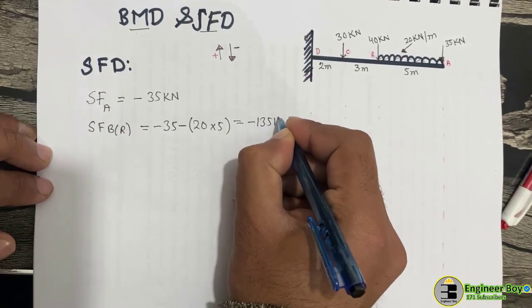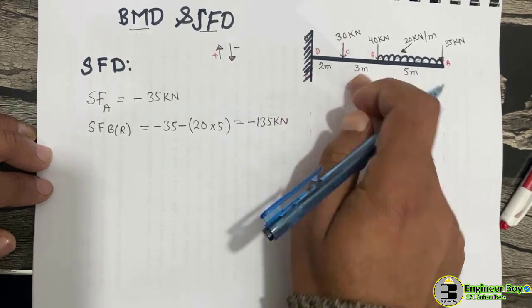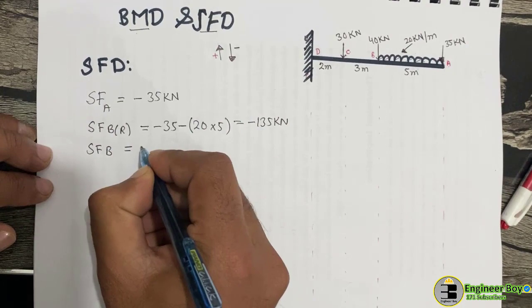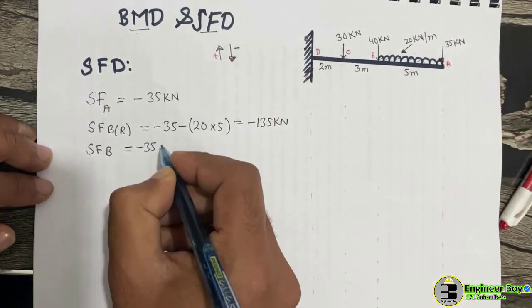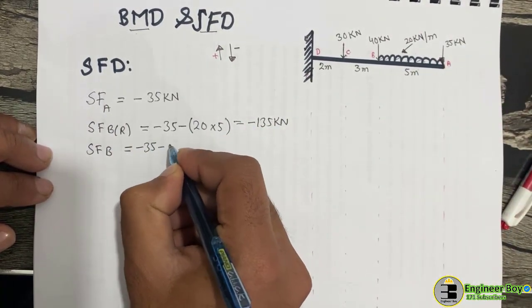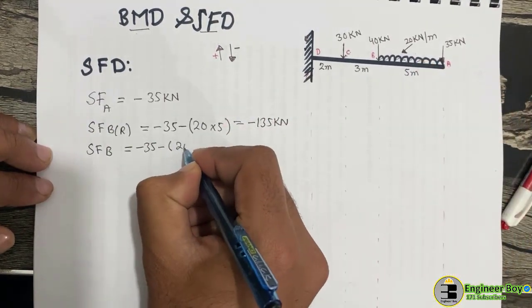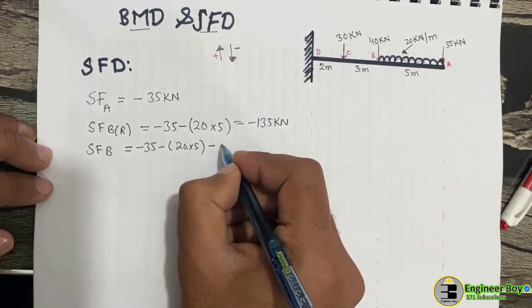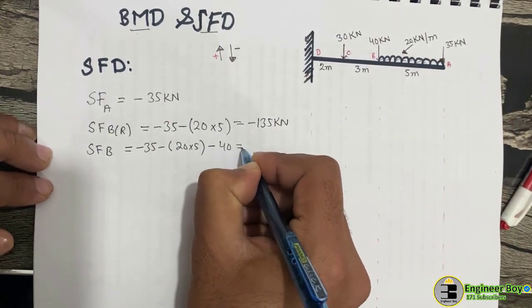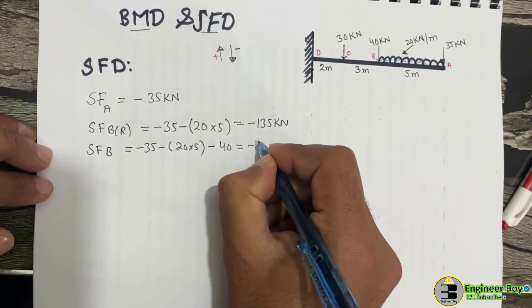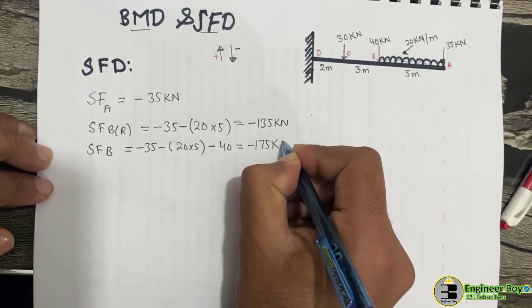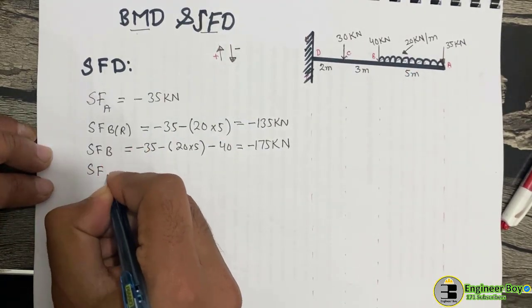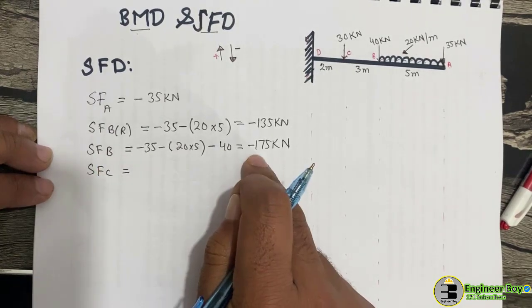The shear force just to the right of point B is minus 135 kilonewtons. Exactly at point B, the shear force is minus 35 (from point A) minus the UDL contribution, minus the point load at B which is 40 kilonewtons, giving minus 175 kilonewtons at point B.